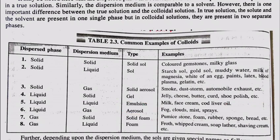Next is emulsion. An emulsion is the type in which the dispersed phase is liquid and the dispersal medium is also liquid. Examples include milk, face cream, and cod liver oil.